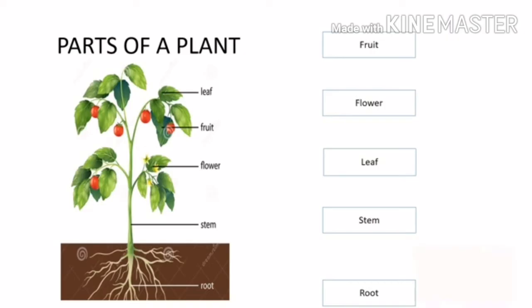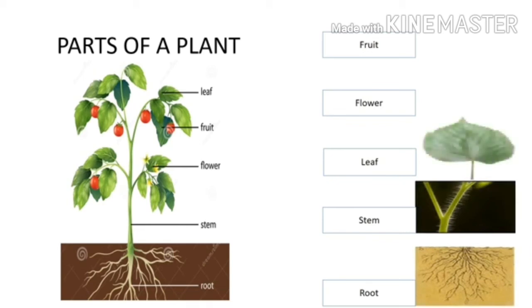These are all parts of a plant. We have here the roots, stem, leaf, flowers, and fruit.